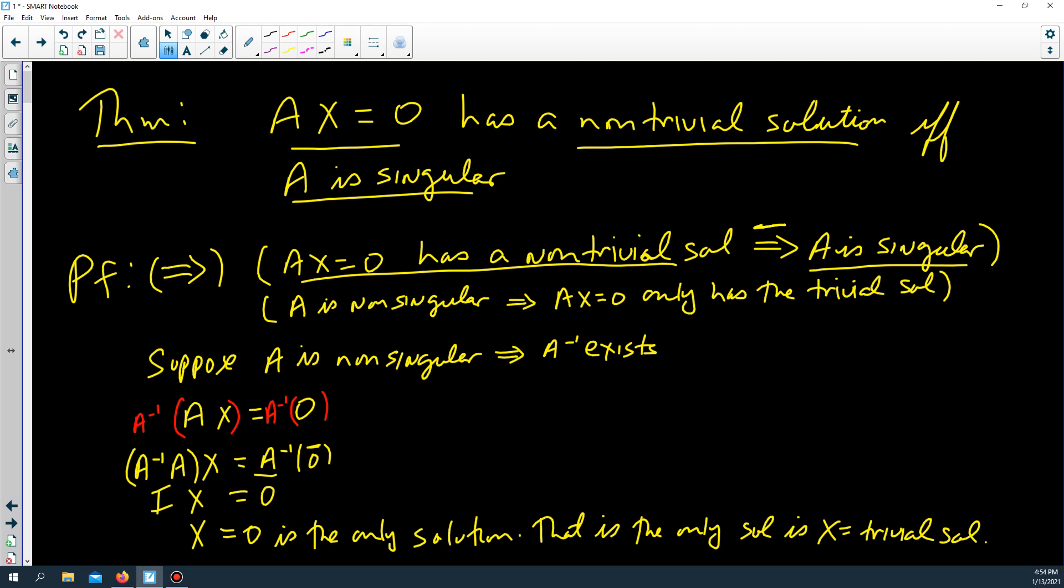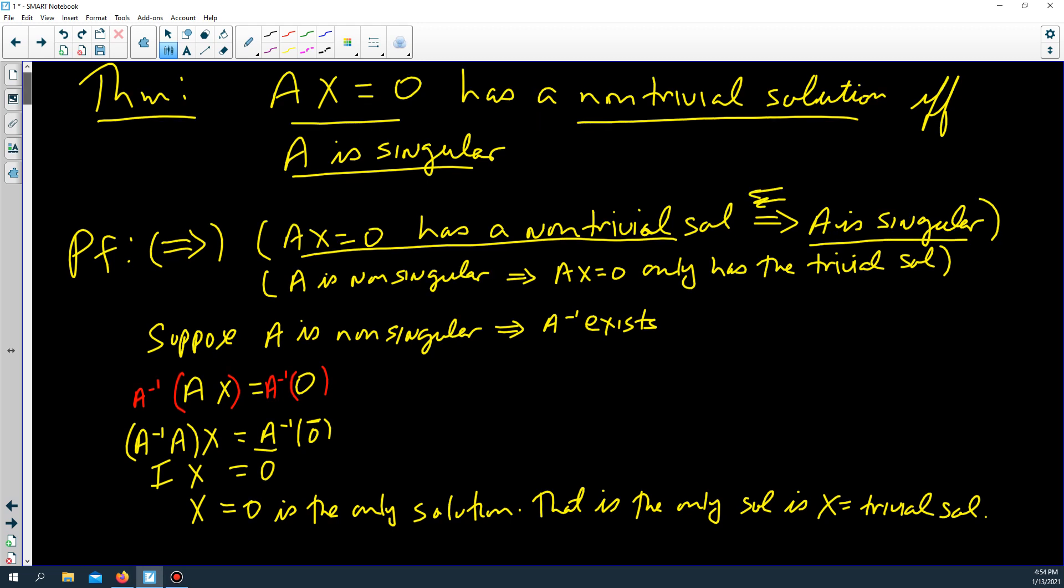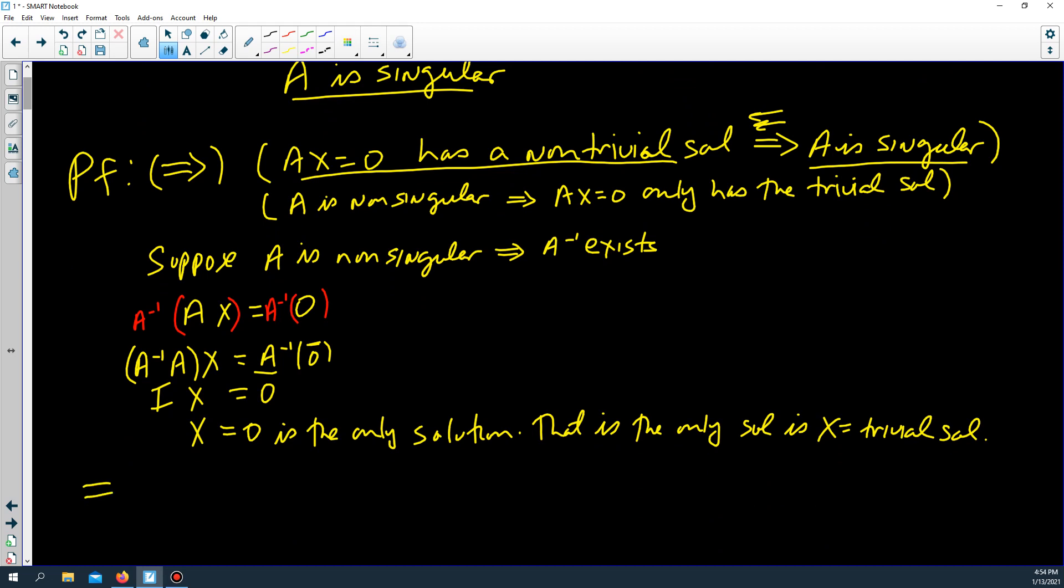Now we need to show this going the other way. Are we going to use the contrapositive or not? So, A is singular implies Ax equals 0 has a non-trivial solution.